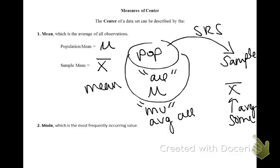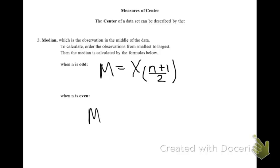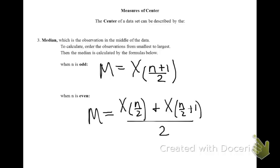X-bar is the average for a sample, and mu is the average for all. The mode is the most frequently occurring value in a data set. The median is the observation that falls exactly in the middle of the data set. We'll need two formulas to calculate the median. The first one is for when your observations are odd — in this case your median is your ordered observation that falls in position n plus 1 divided by 2. If your sample size is even, then your median is the average of two numbers: the number in the n over 2 position plus the number in the n over 2 position plus 1, divided by 2. Remember, to make sure you're falling in the correct position, you'll need to order your observations from smallest to largest.